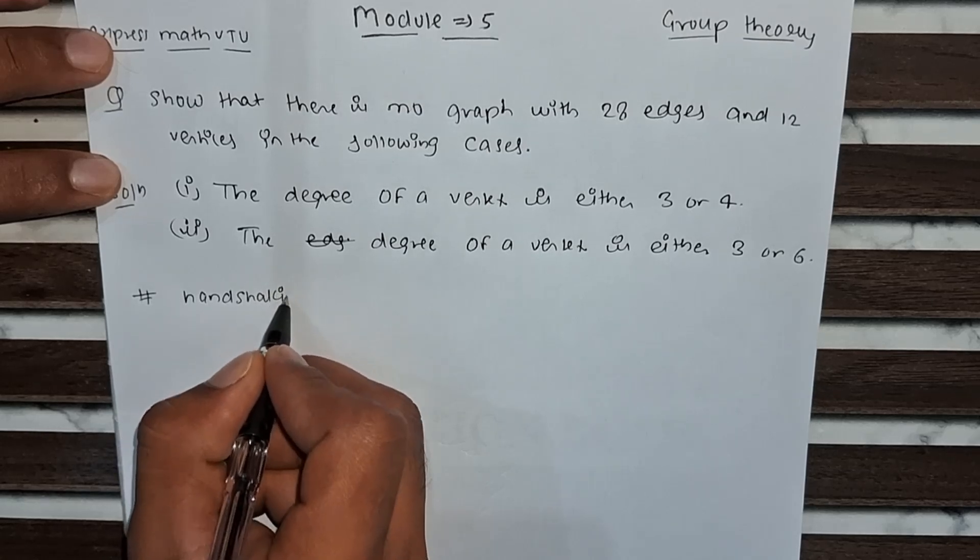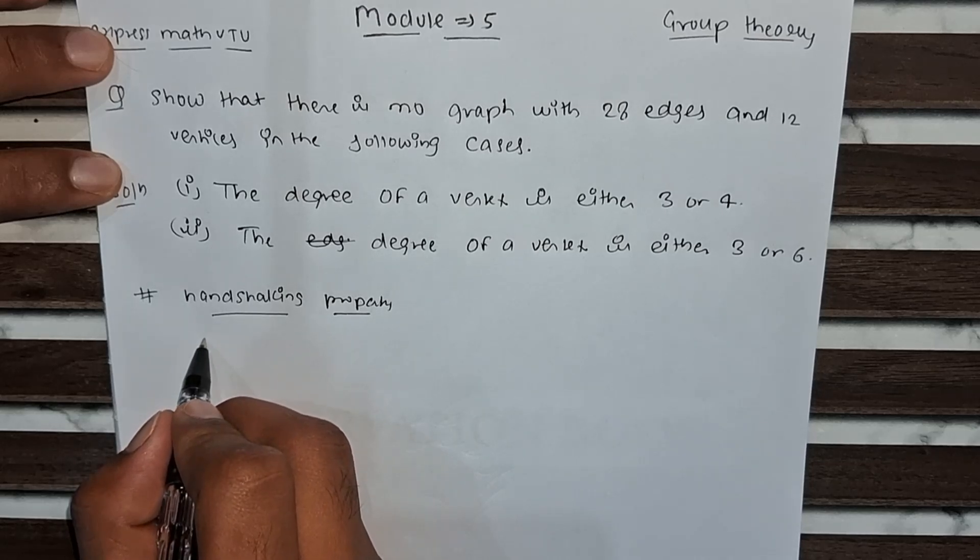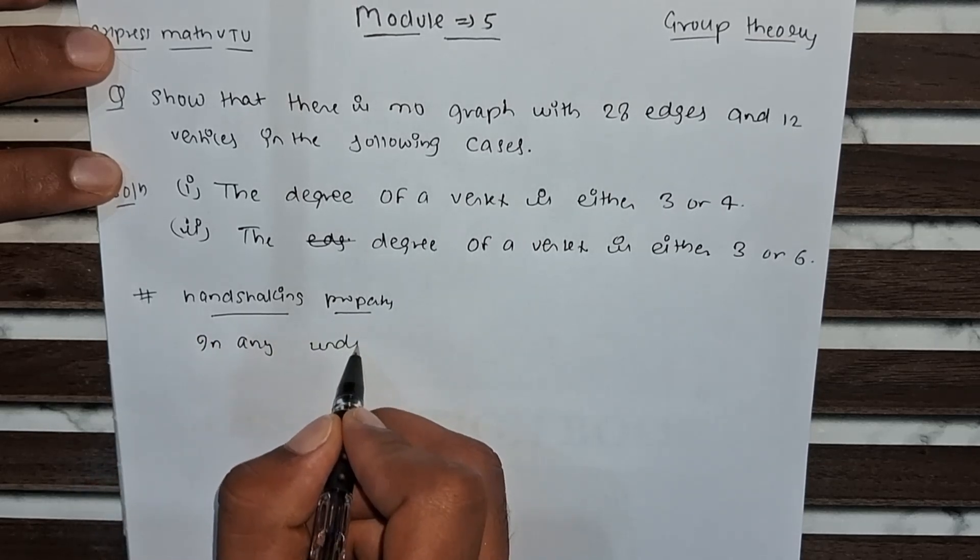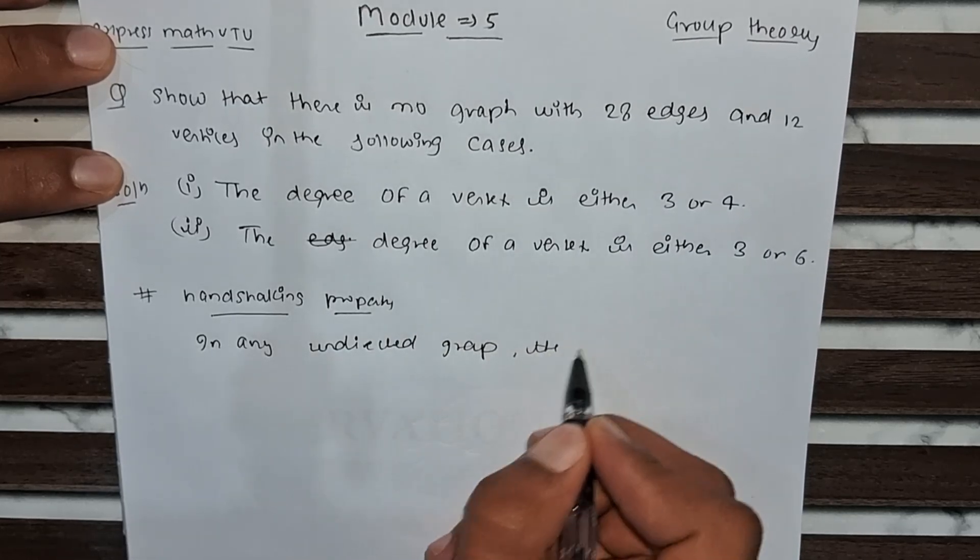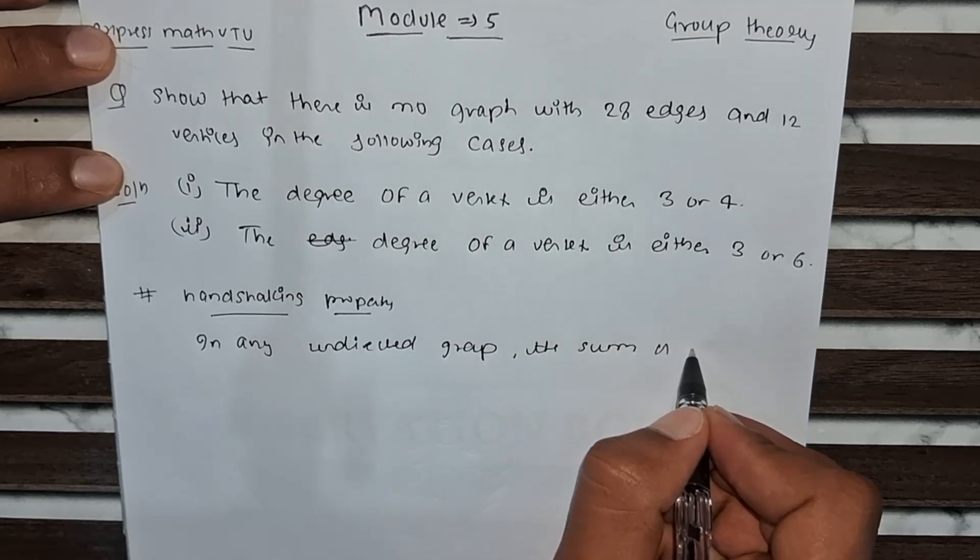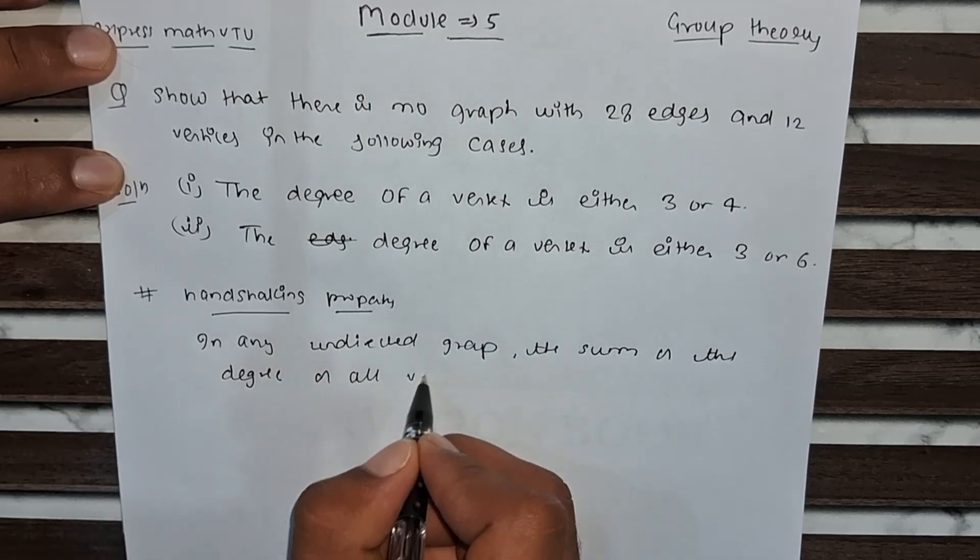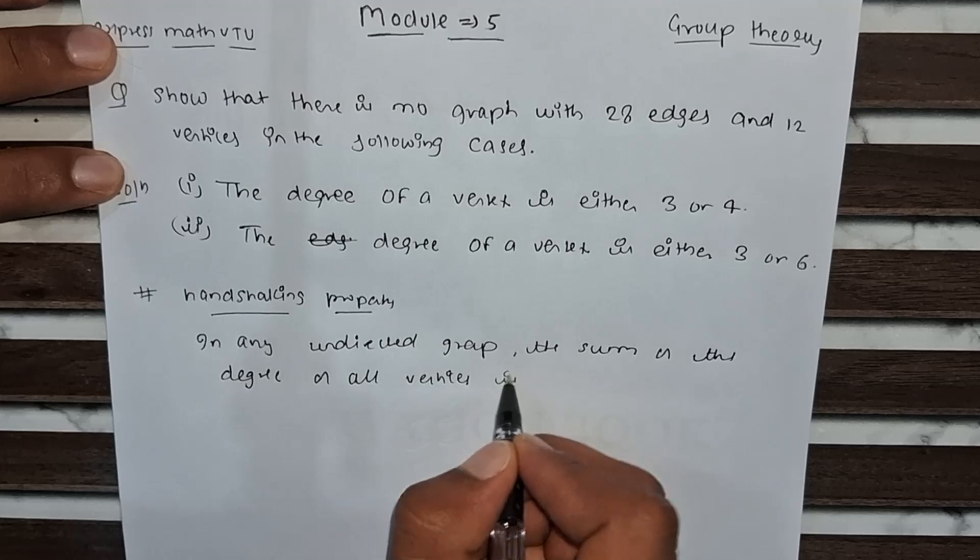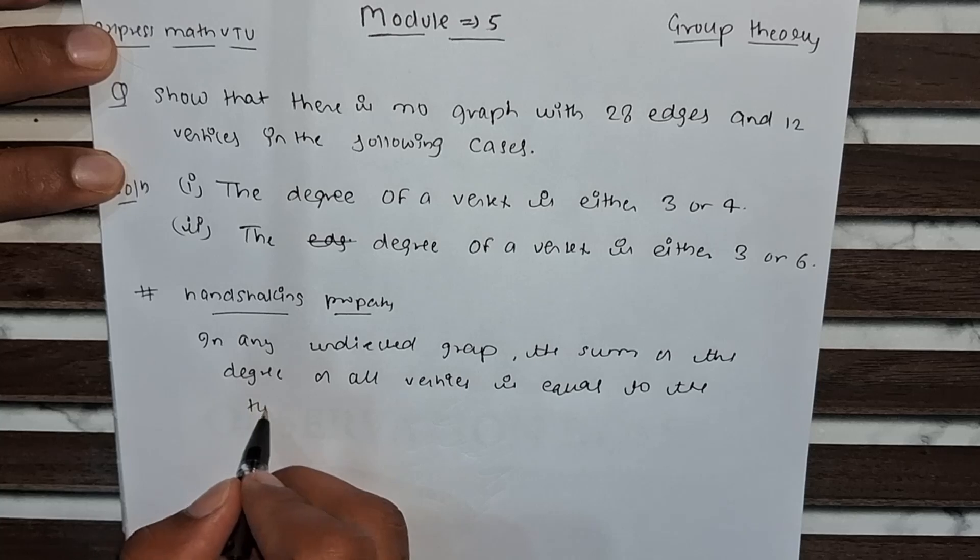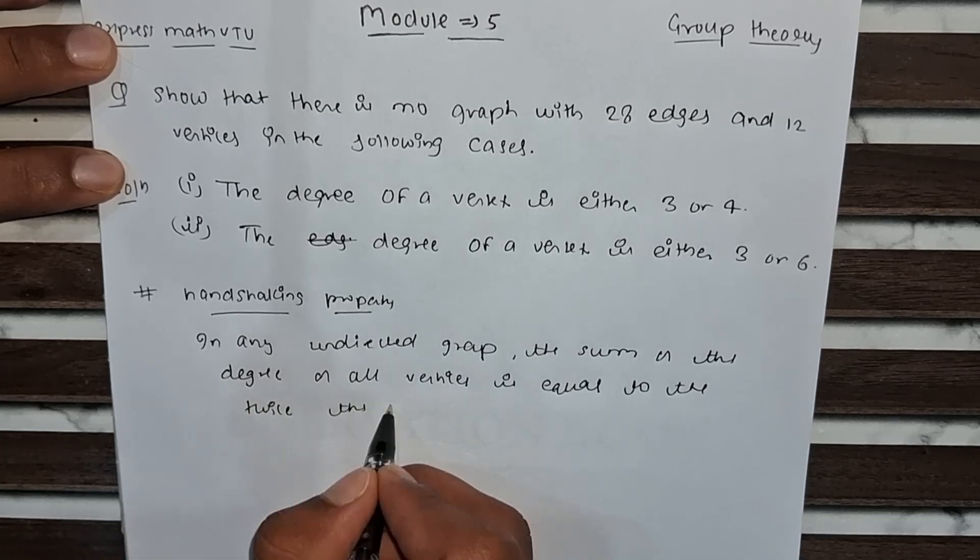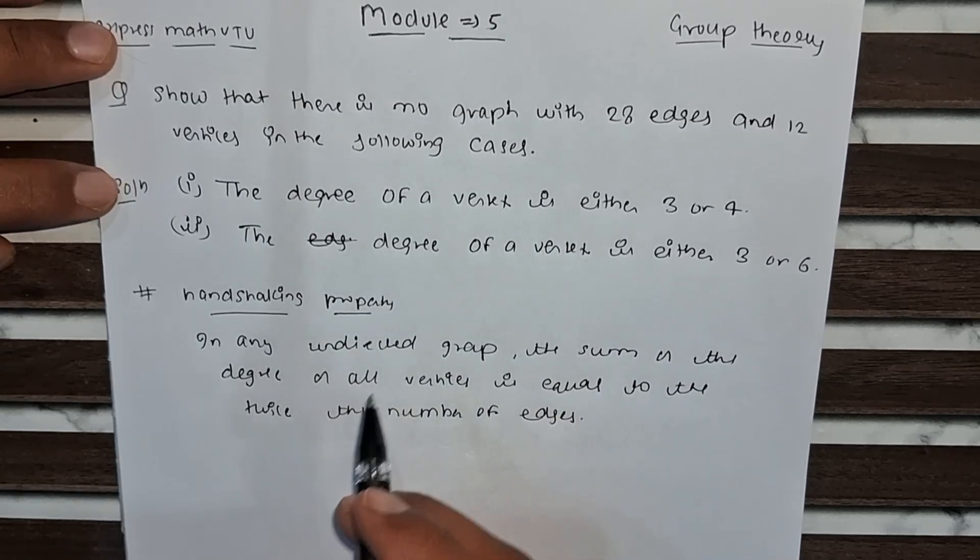Handshaking property: the statement is, in any undirected graph, the sum of the degree of all vertices is equal to twice the number of edges.